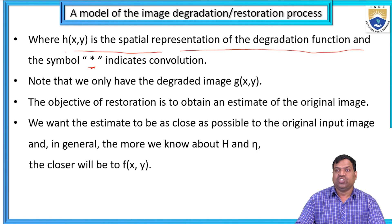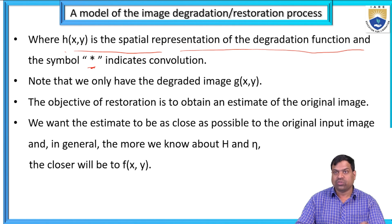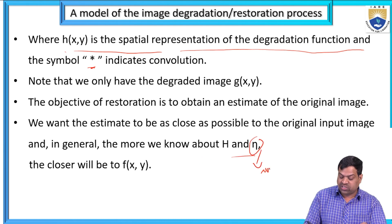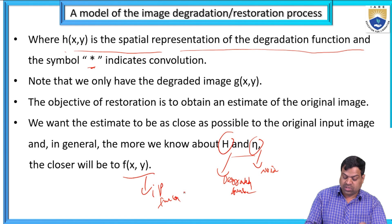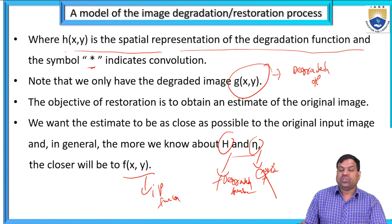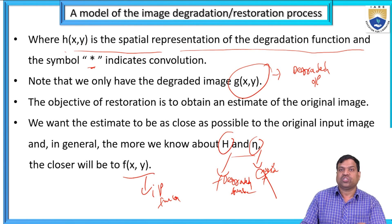We only have the degraded image g(x,y). The objective of restoration is to obtain an estimation of the original image, estimating as close as possible to the original input. In general, the more we know about h and η, the better. The degraded output equals the original image with degradation applied: noise is added in degradation, and that noise is removed in restoration.